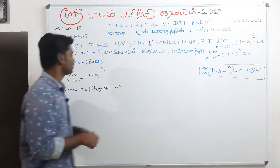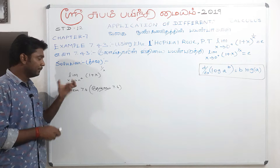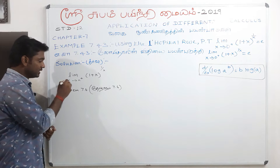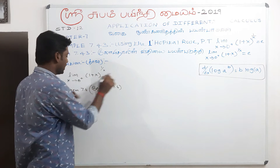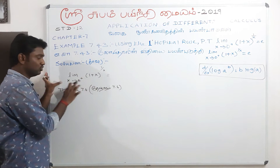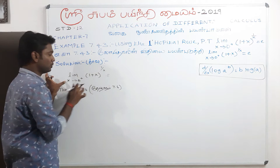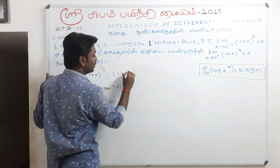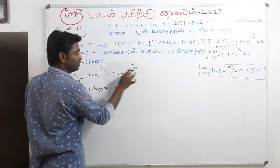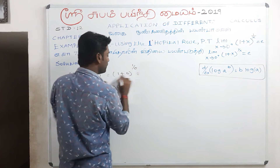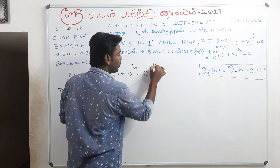Now we can substitute the limit x to 0. When we substitute x equals 0, we get 1 plus 0 raised to the power 1 divided by 0, which gives us 1 to the power infinity — an indeterminate form.